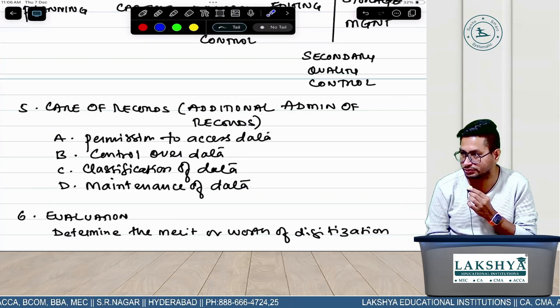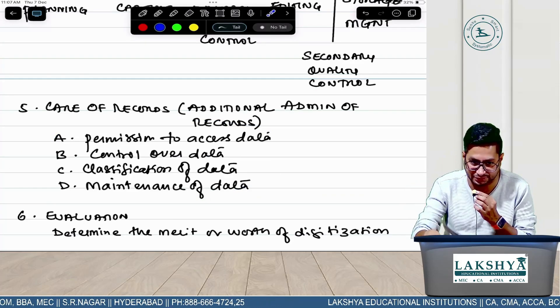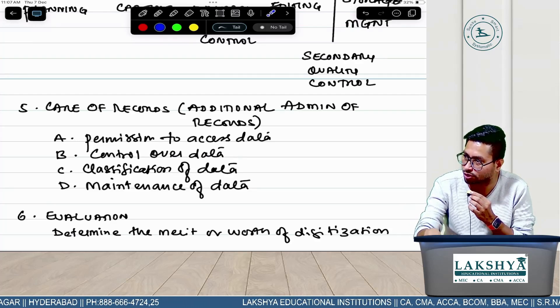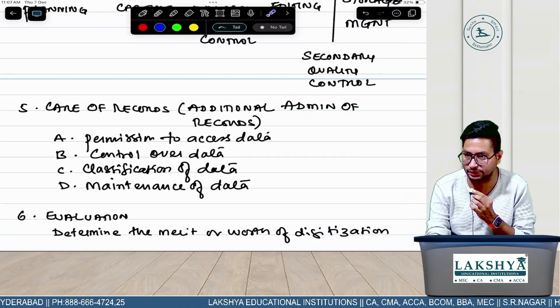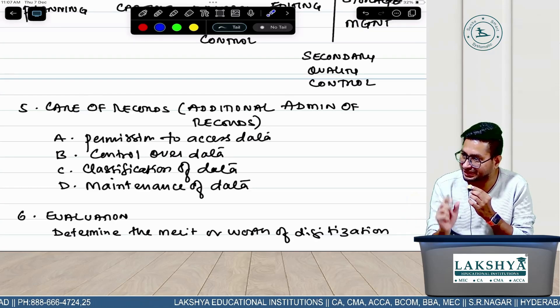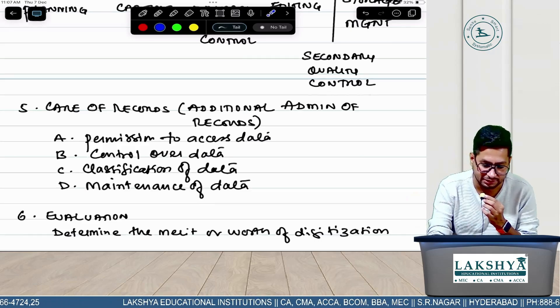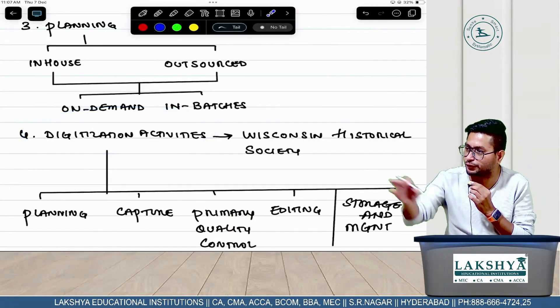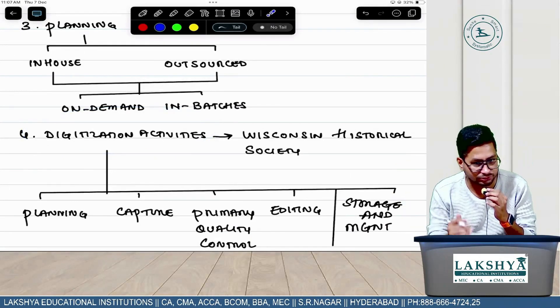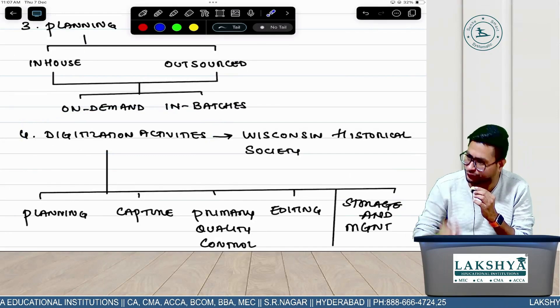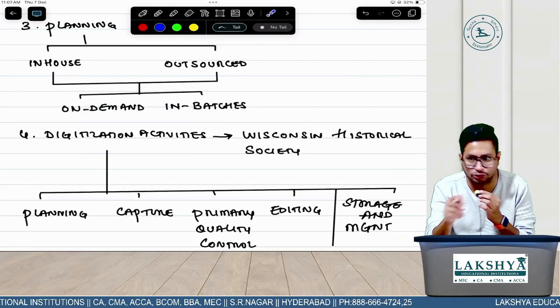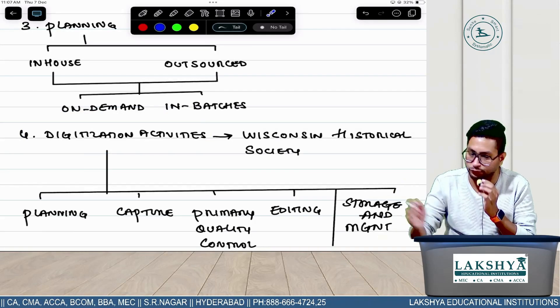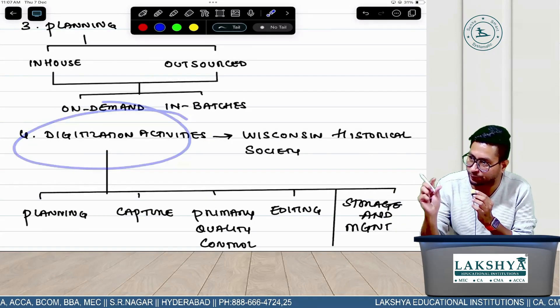Simple. You should be ready to write this answer also. If they give one point as an individual question, you should be able to write that. If they give the overall question, write the overall answer. Your preparation should be such that you can write the same answer for small marks or total marks. Plus, they can also give you a third type - like from digitization steps, digitization activities for two marks.